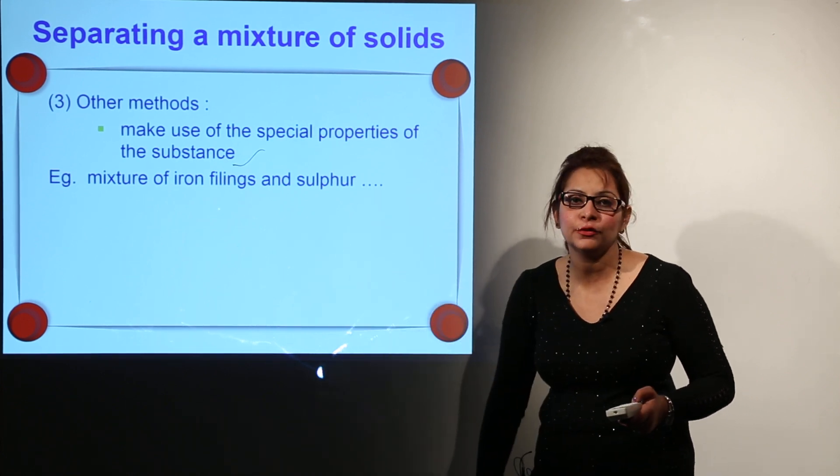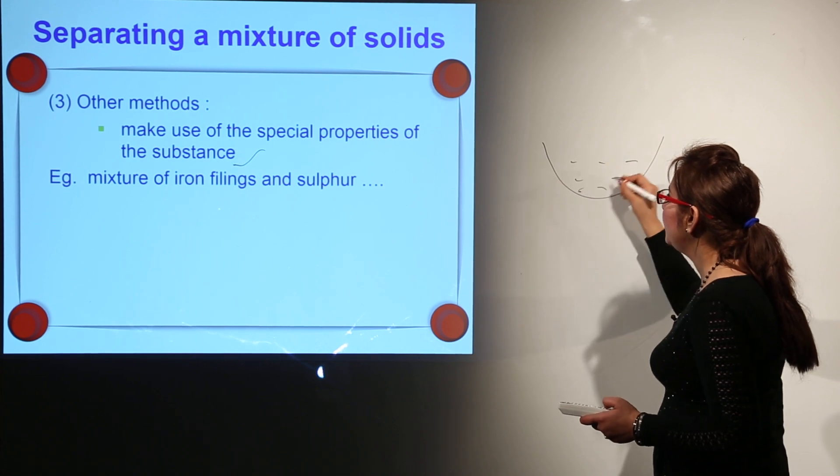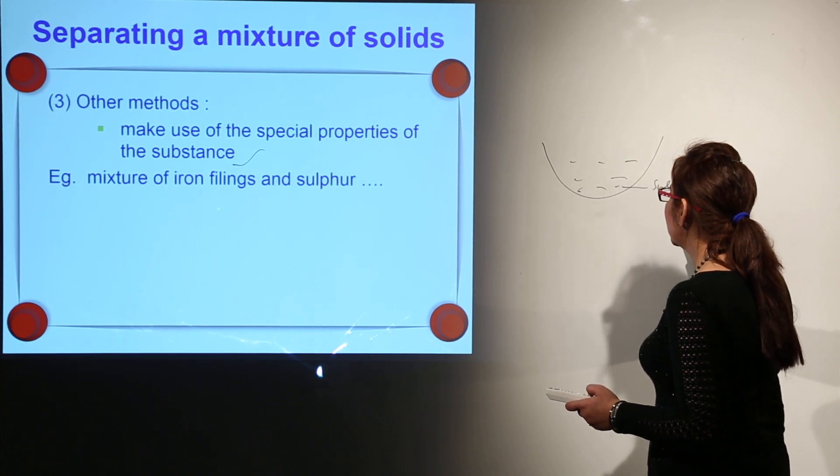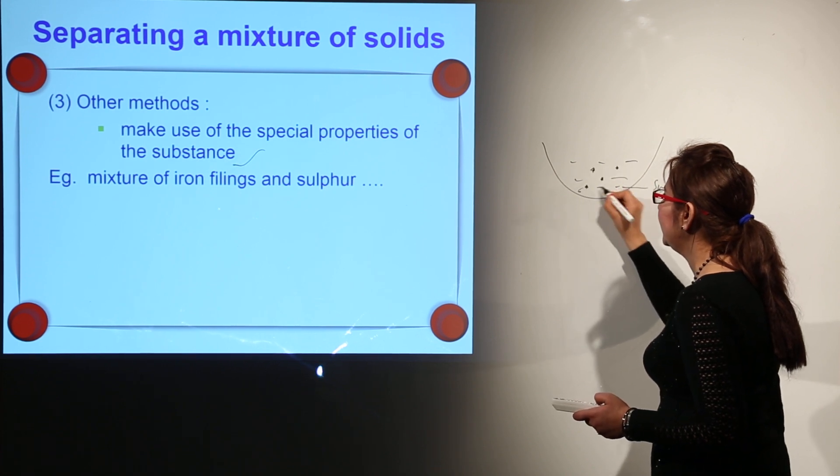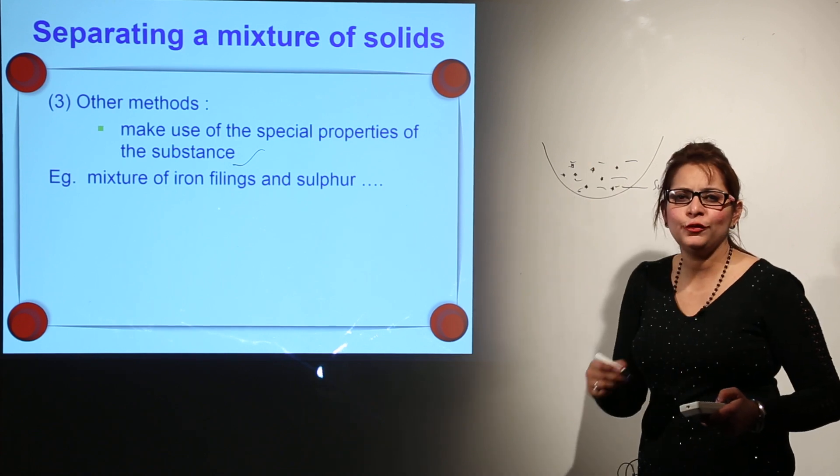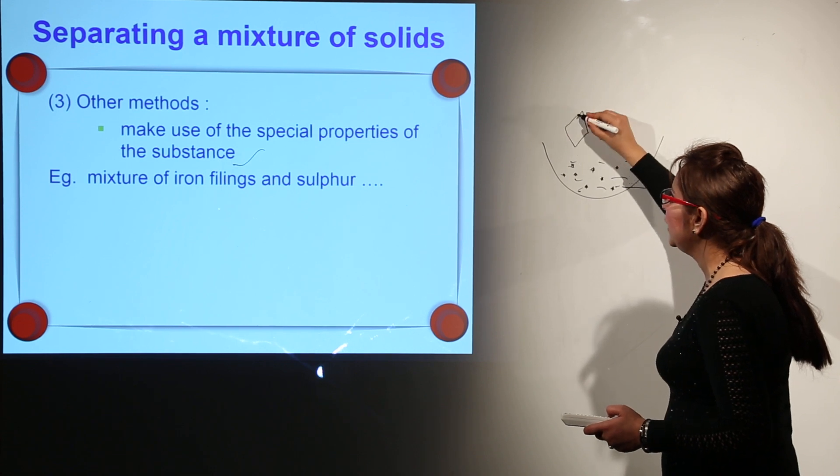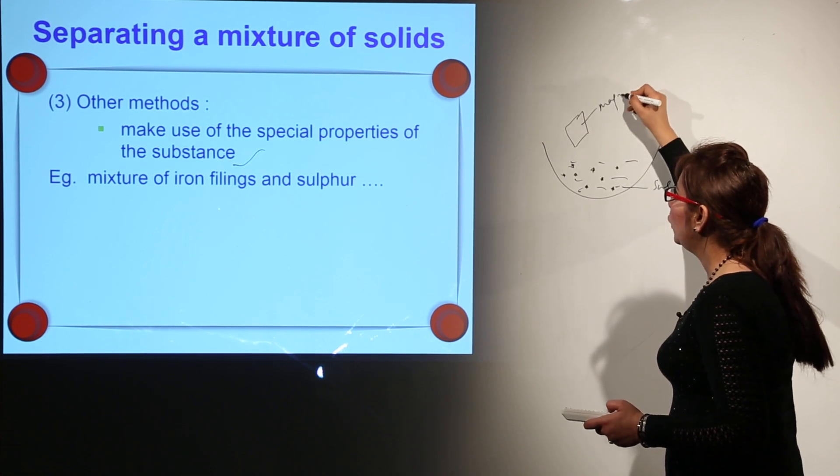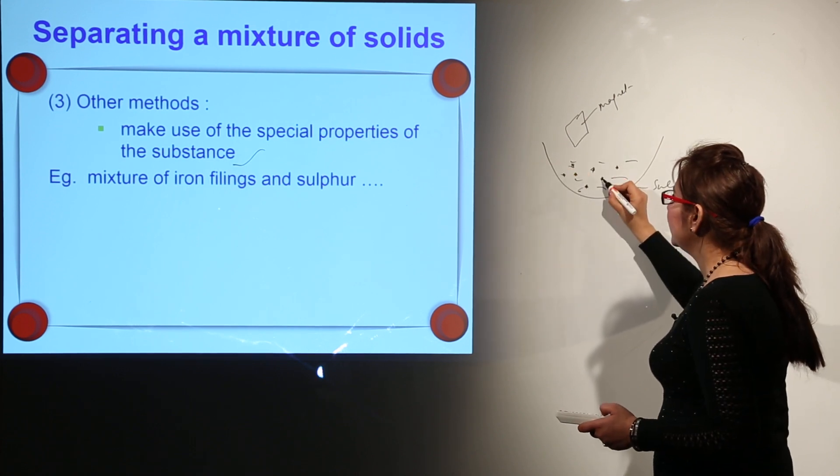What we are going to do is take a dish in which we have a mixture of sulfur powder and iron chips, which I'm indicating by these stars. They can be iron chips, filings, iron nails, whatever. So what I'm doing is just making use of a magnet.